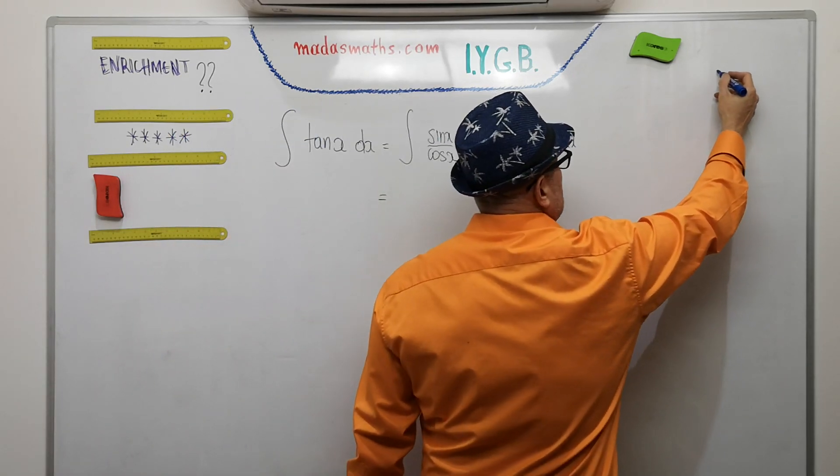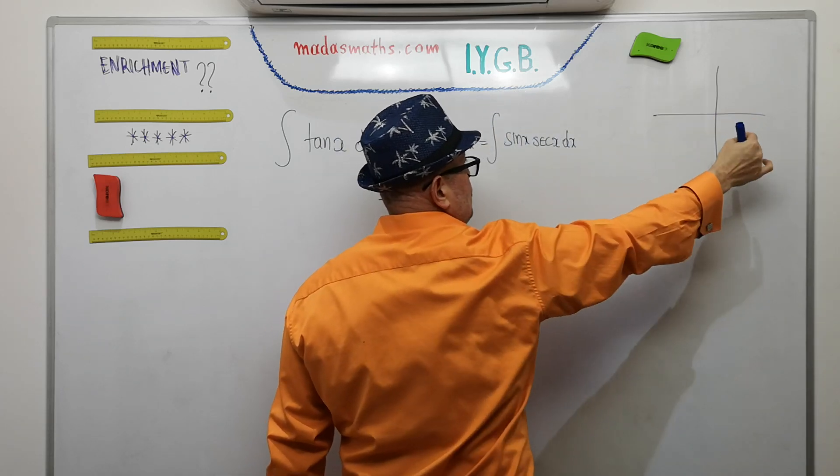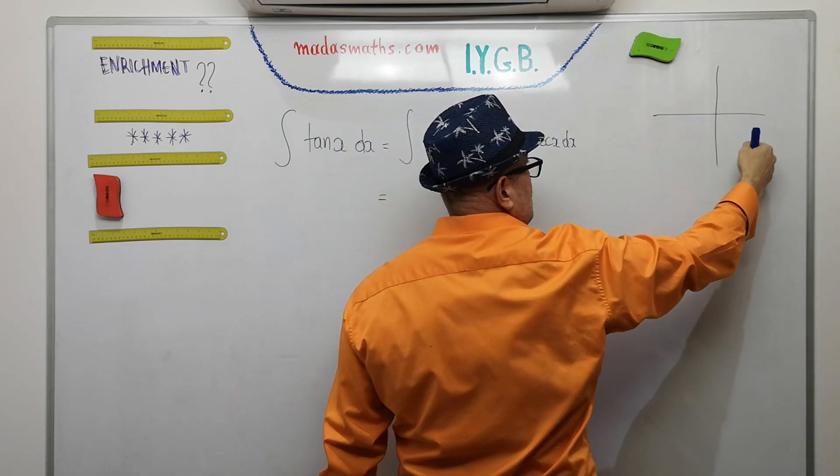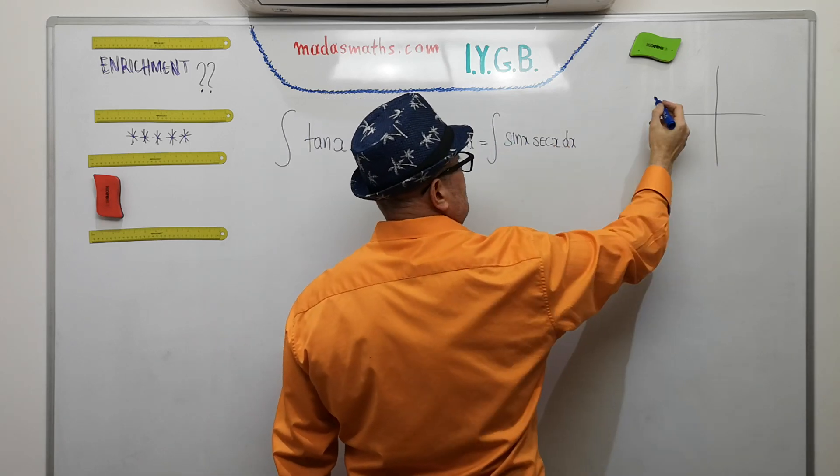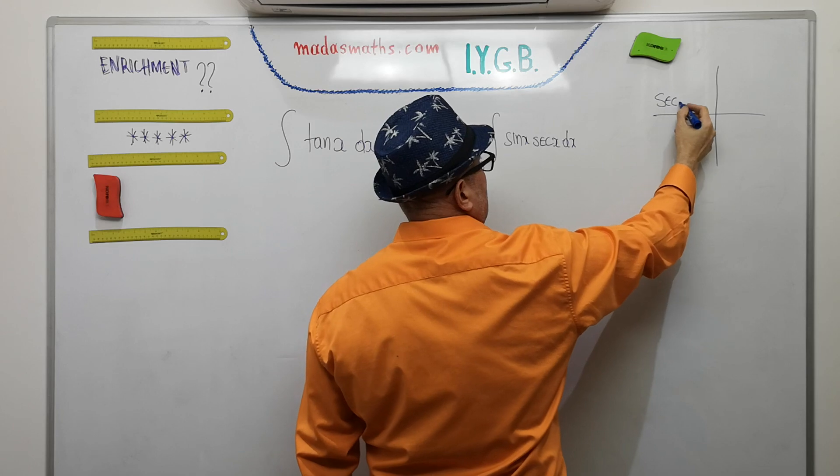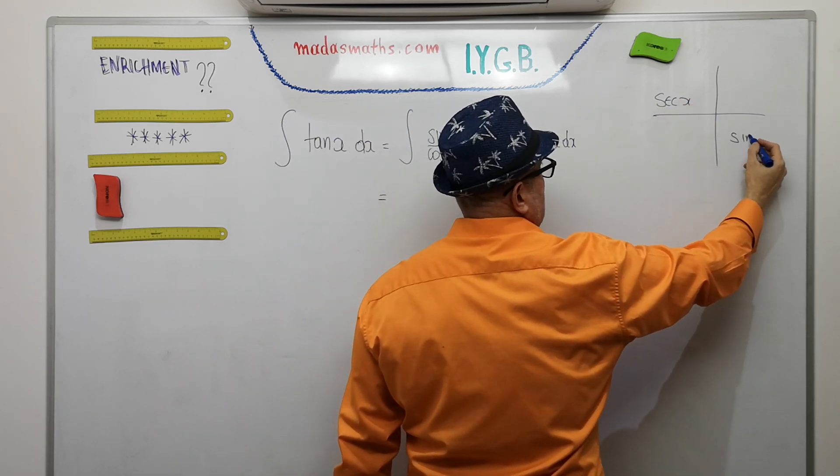So I'll do my integration by parts with a little grid. I'll put one thing in there which I differentiate, and one bit there which I'm gonna integrate back. So I'm going to, in this particular case, differentiate the sec, and I'm going to integrate back the sine.